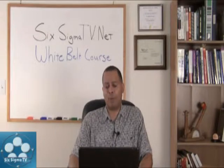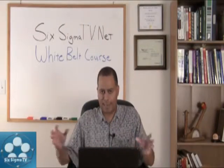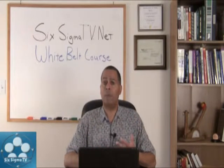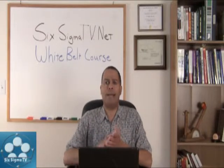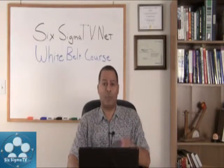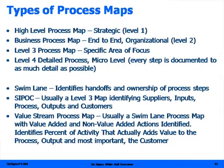The next step in the Define phase is to map your process. There are basically four levels of process mapping. High level is very strategic — the overall organization. Then we get down into the business process and focus on where the problems are occurring. Then we get to a micro-level detail where we gather the Xs impacting our Y — all the little activities and inputs we do and how they impact the output. That's where you start identifying root causes creating variation and problems in your process.